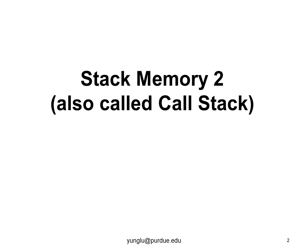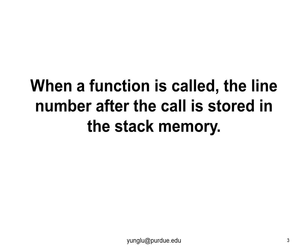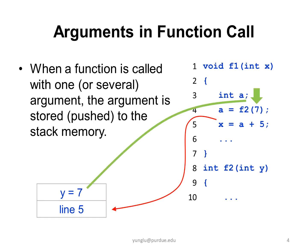This second lecture explains what other information is stored in the stack memory. Let us review the previous lecture. When a function is called, the line number after this call is stored in the stack memory. This is called the return location because it tells the program where to continue after the function finishes.